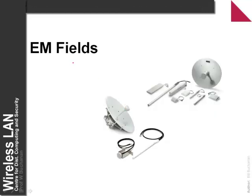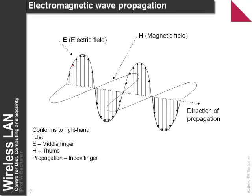So what are electromagnetic fields? Basically, an electromagnetic wave propagates with an E, or electric field, an H field, or magnetic field, and some form of direction.